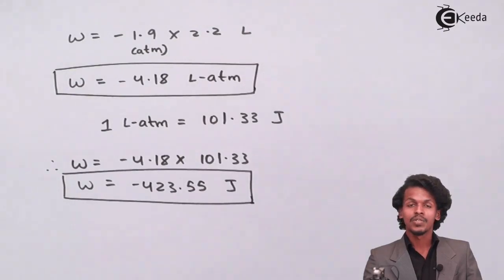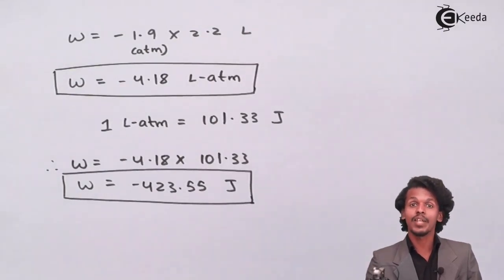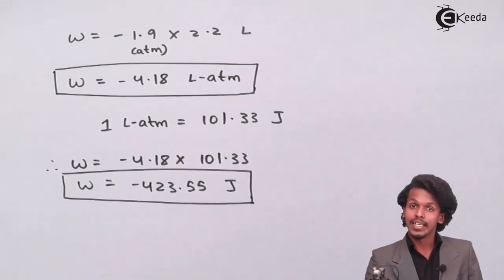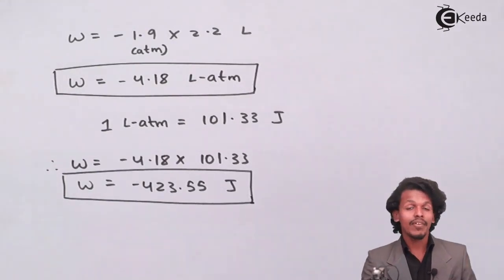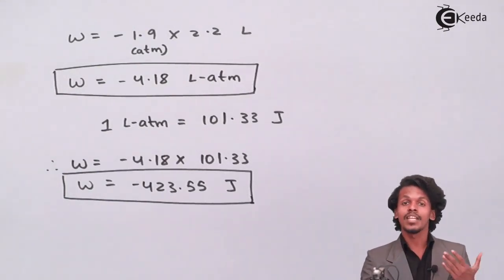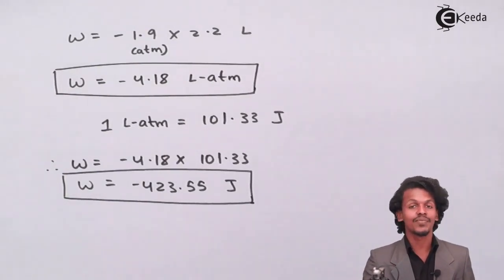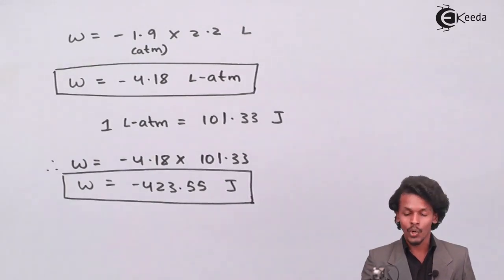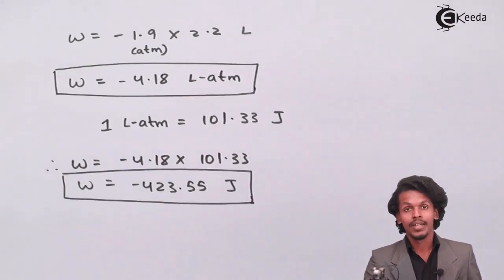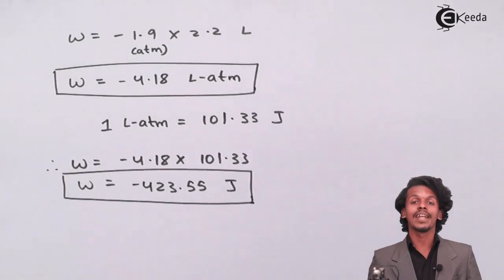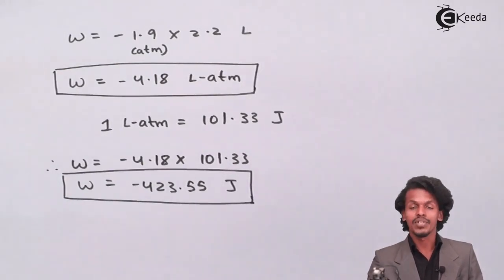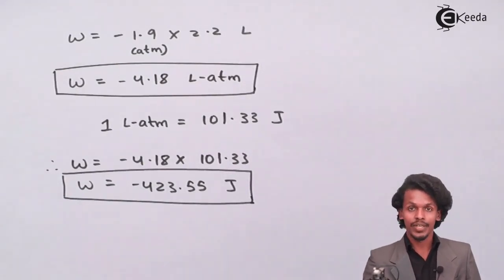This was one of the simplest problems, but very interesting because the number of moles and temperature were not included in the calculation — they are not related to the formula used here since it is an isothermal irreversible process.